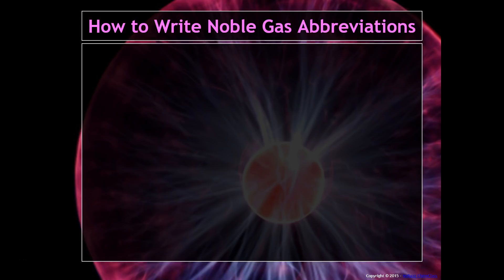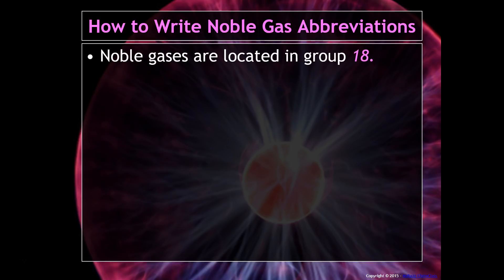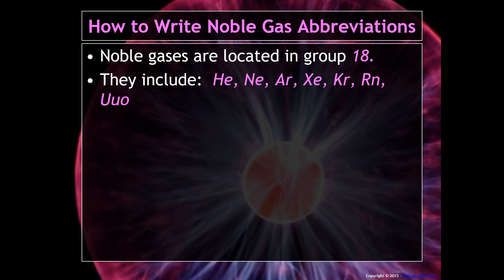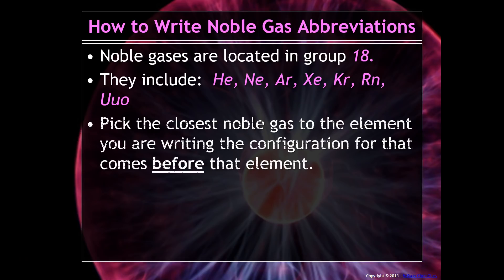This lesson gets even better because now we're going to learn how to write abbreviations, because that's a lot to write out. Noble gases, if you recall, are located in Group 18 of the periodic table — that last group all the way to the right. They include helium, neon, argon, krypton, xenon, radon, and oganesson.